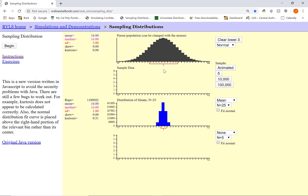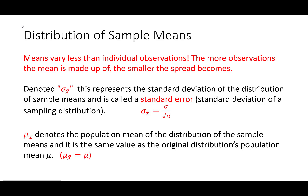Now let's talk about that spread. We're going to go more in depth into the standard deviation of our new distribution. What we notice is the means vary less than individual observations — the more observations you have, the smaller your spread becomes. We denote the spread of our new distribution as sigma x-bar, where x-bar represents the standard deviation of the sample mean. We call this the standard error. Anytime you're dealing with a standard deviation of a sampling distribution, not an original distribution, we denote that concept as the standard error.